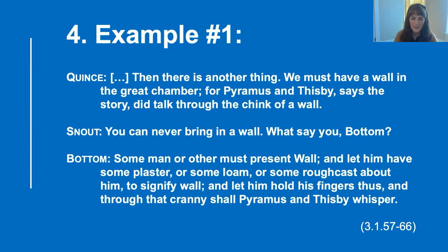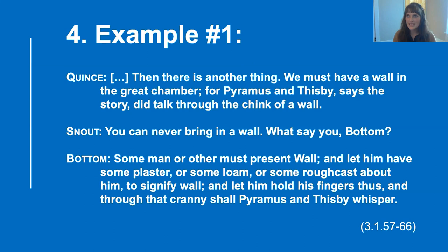One of the things they also have to talk about is: what happens if they're so successful that the audience forgets it's not real? What if they bring a lion out and it scares everybody? To a certain extent, Shakespeare is making fun of these characters for not understanding how a play works and for thinking they'll be such good actors that they'll scare the audience because one of the characters has to play the part of the lion. So here's what I want to do: I'm going to read this passage with you and then pause and analyze what's happening in it.